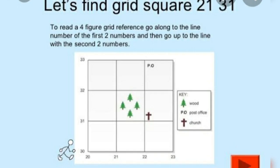Let us find the grid square number 21 and 31. Look at the trees shown over there — this is our object and we have to find its four-grid location. We always start with the southwest section of the map. The number 20 is for the line of the easting and 30 is for the line of the northing. For the line of the easting, we go to the left line of the object. The object is trees, and the line number to the left of it is 21, so that is our first reading.